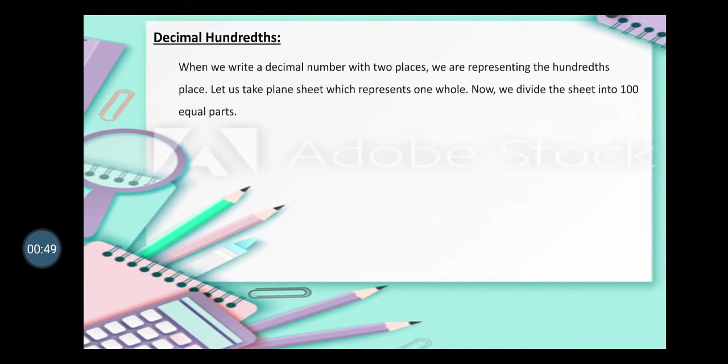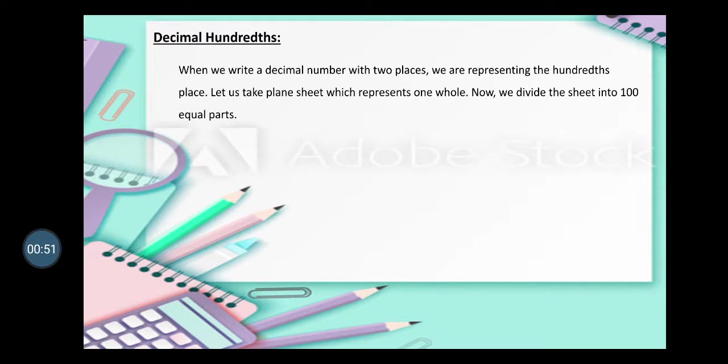When we write a decimal number with two places, we are representing the hundredths place. Let us take a plain sheet which represents one whole. Now we divide the sheet into hundred equal parts like this.